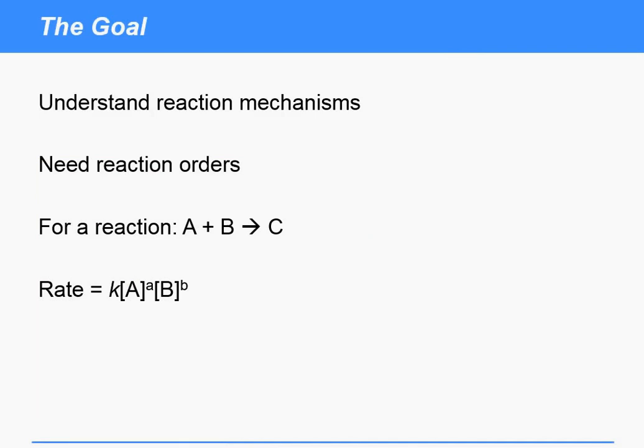So remember the overall goal: we want to try and understand reaction mechanisms, and in order to do that we need reaction orders, which are these small powers here that determine how much the rate depends on the concentration of the individual reactants that are present.